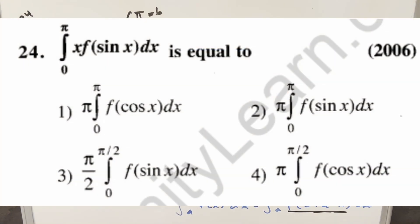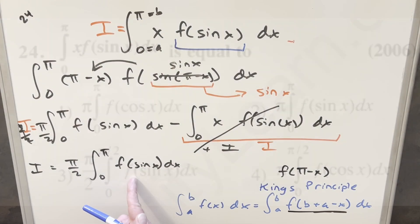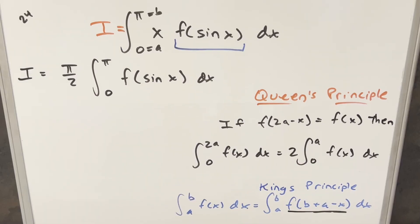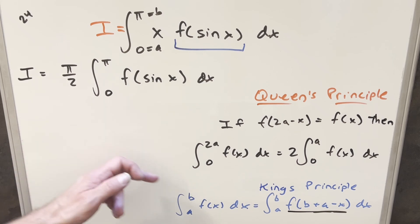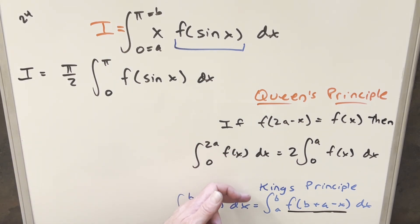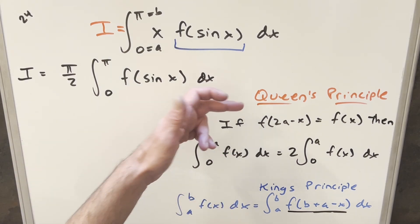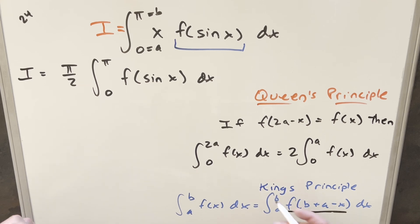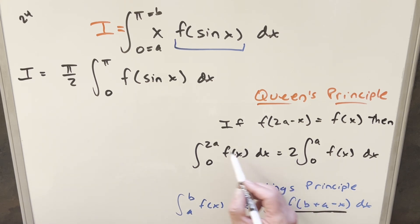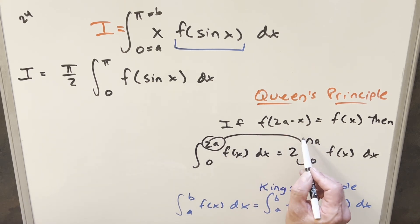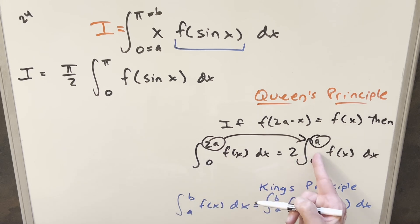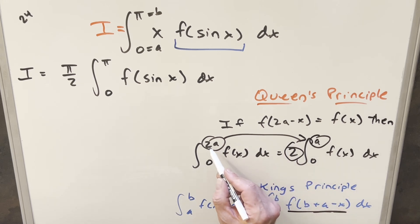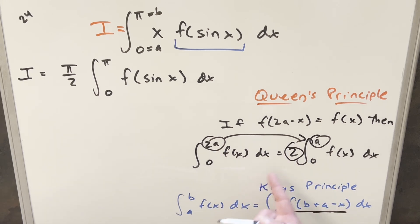When I first did this, I thought maybe this would be enough — we've transformed it, got rid of the x, and have something simpler. But this is not one of our multiple choice options. So next, I've added another formula on the board: Queen's Principle. We did King's Principle earlier; now Queen's Principle is going to allow us to cut the bound in half — the upper bound cuts in half. It's a minor change but helps us simplify in some cases.